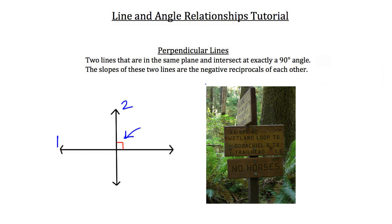When we say that the slopes of those two lines are the negative reciprocals of each other, here's what that means. Let's say that line 1 had a slope m equal to 1/2. Because they're perpendicular, the slope of line 2 would have to be the negative reciprocal. So whatever the sign is in front of the first line — in this case a positive 1/2 — we switch that to the opposite sign, making it negative, and we take the reciprocal of the fraction, so we flip it. Now instead of 1 over 2, it's 2 over 1.